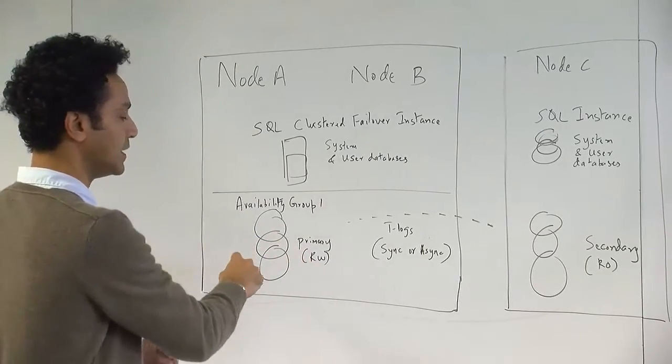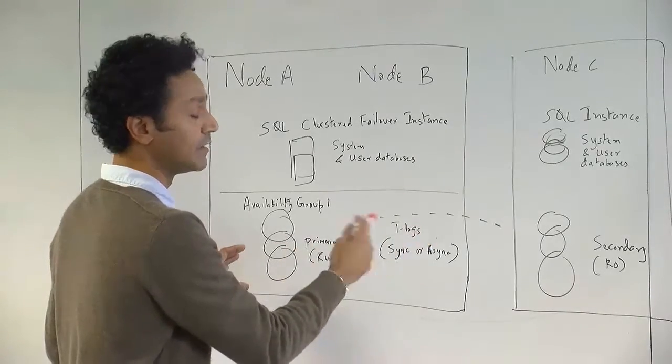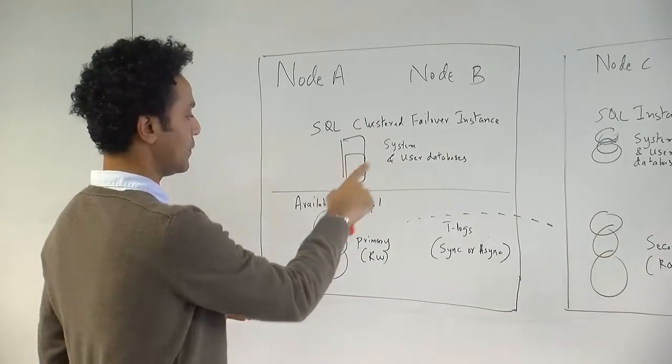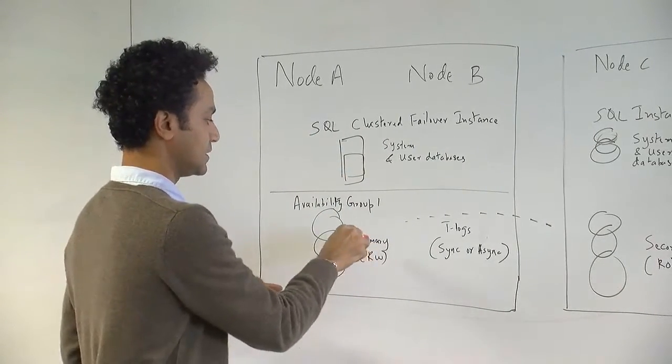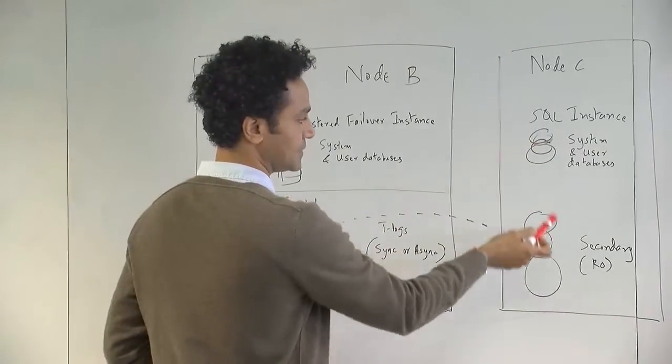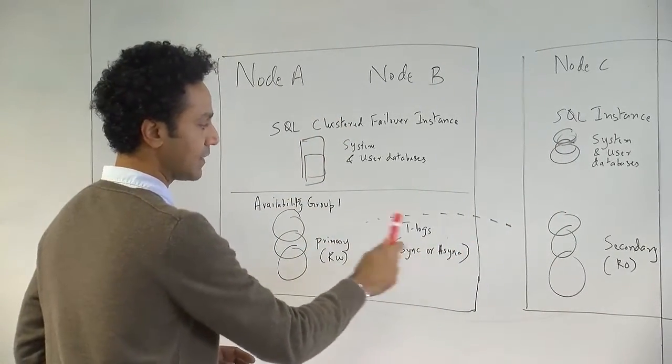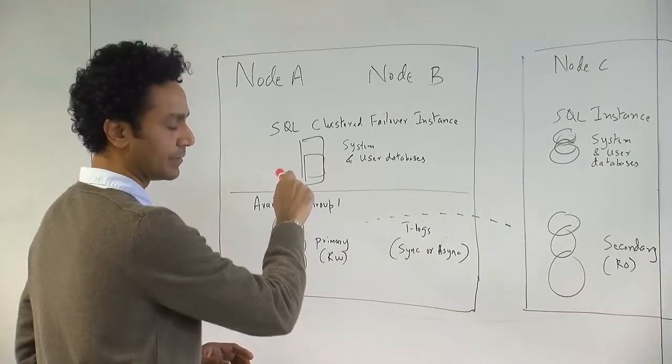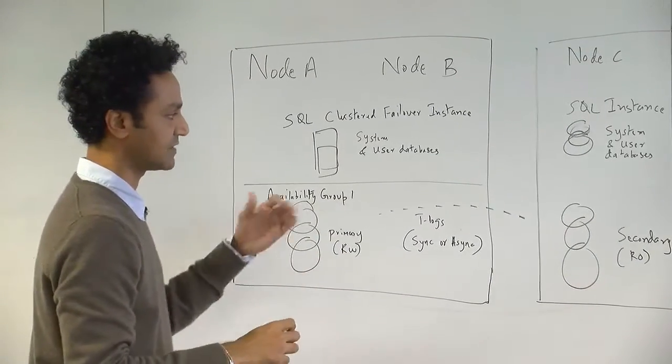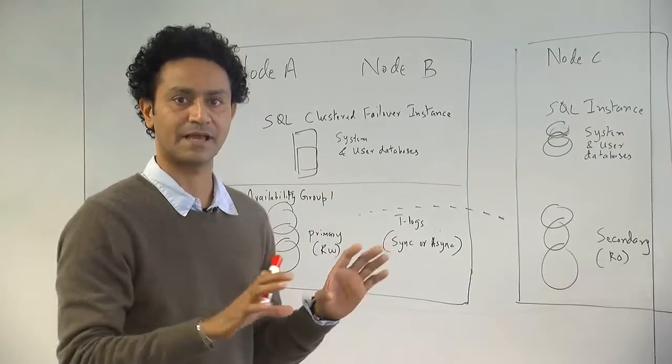You also have an availability group that consists of a discrete set of user databases that you want to have that level of clustering availability from a high availability standpoint. Within the availability group on node A and node B, which is part of a cluster as well, the primary database is going to be a primary, which is read-write. And then you have a secondary database that sits on node C, which is in a different data center. Primarily using transaction logs to send the data across between the node A and node B cluster and node C. This could be synchronous or asynchronous from a transaction log standpoint. That's just a generic simple example of an availability group.